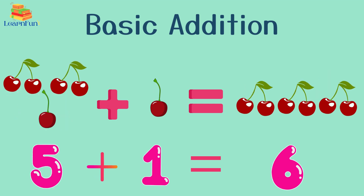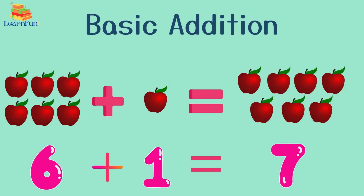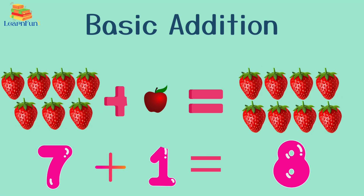Five cherries plus one cherry equals six cherries. Six apples plus one apple equals seven apples. Seven strawberries...